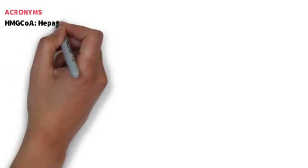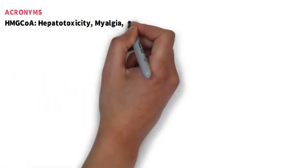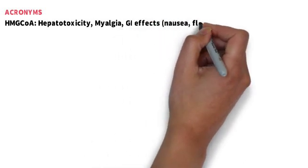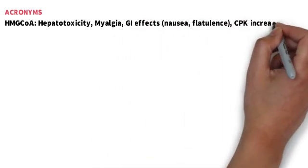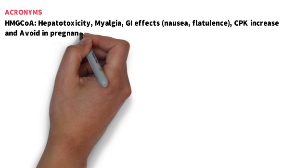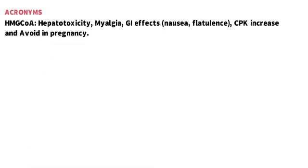Acronym-based mnemonics use the first letters of the target words to assist in remembering large amounts of information. For example, to remember the side effects of statins, think of the acronym HMG-COA. H stands for hepatotoxicity, M for myalgia, G for GI side effects such as nausea and flatulence, and C for CPK increase, as well as A for avoid in pregnancy. HMG-COA also reminds you of the enzyme that statins target for their lipid-lowering effects.